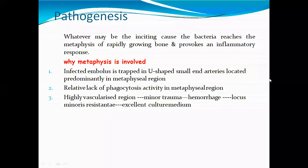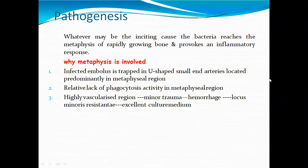The U-shaped sinusoids are small and arteries predominate in the metaphyseal region. There is a relative lack of phagocytosis activity in the metaphyseal region. This highly vascular region means that minor trauma or hemorrhage creates a locus of minor resistance, which will cause an excellent culture media for infection.